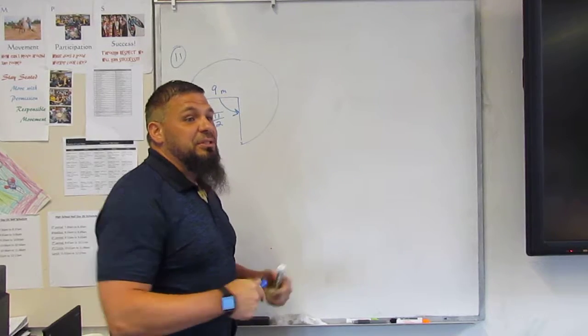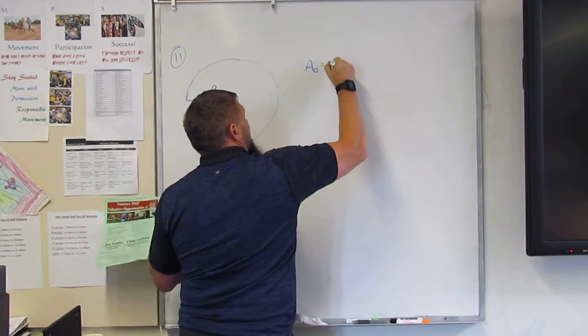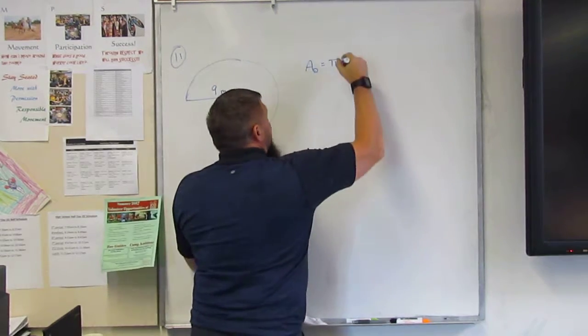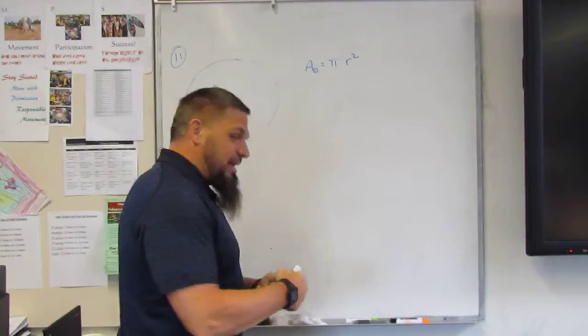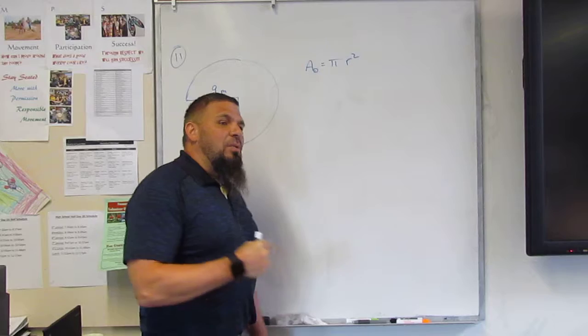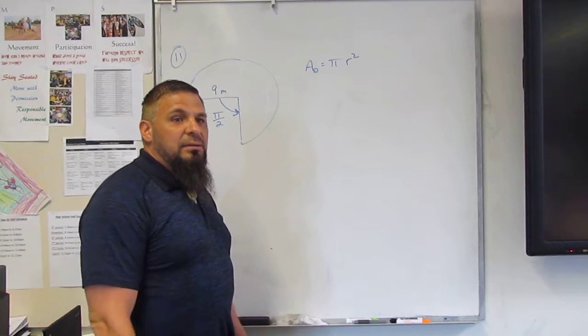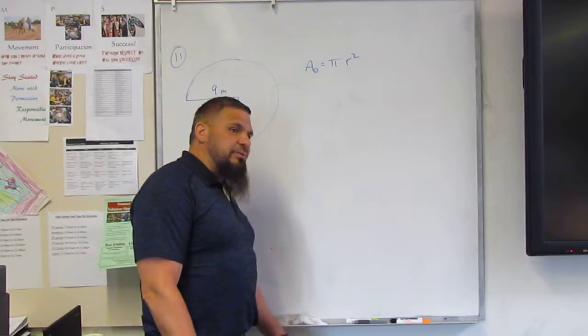So we need to know what is the area of a circle, first of all. The area of a circle is equal to pi r squared. Very good. That's almost always given to you at the beginning of the test. Pi r squared is the area of a circle.